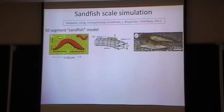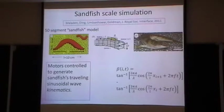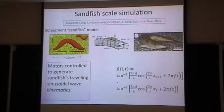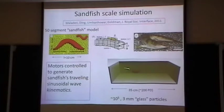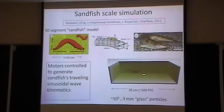We use a discrete element model validated by experiment, and cook up a 50-segment sandfish model. The angle between segments — beta — is controlled to replicate a traveling sinusoid of given amplitude A, wavelength lambda, and frequency. We place it in a simulation box of approximately this size containing about 10^5 three-millimeter glass particles. In simulation we can also make the body shape into a taper resembling the actual animal — narrower at the snout and tail, thicker in the middle — embedded in a 3D granular medium.